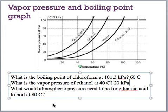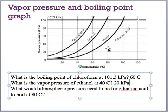For the last question, what atmospheric pressure would be needed for ethanoic acid to boil at 80°C? We go to 80°C on the ethanoic acid line and read the vapor pressure, which crosses at about 30 kPa. So atmospheric pressure would have to be 30 kPa — we'd all be dead, but that's what it would have to be. That's video five on liquids.